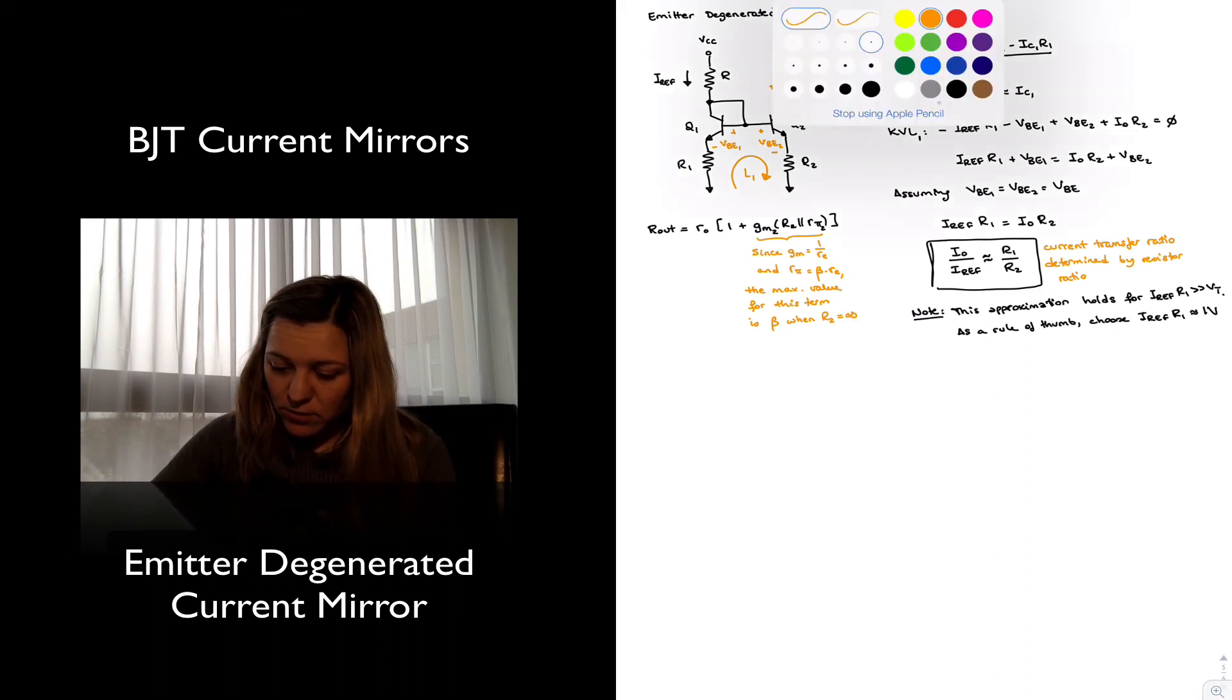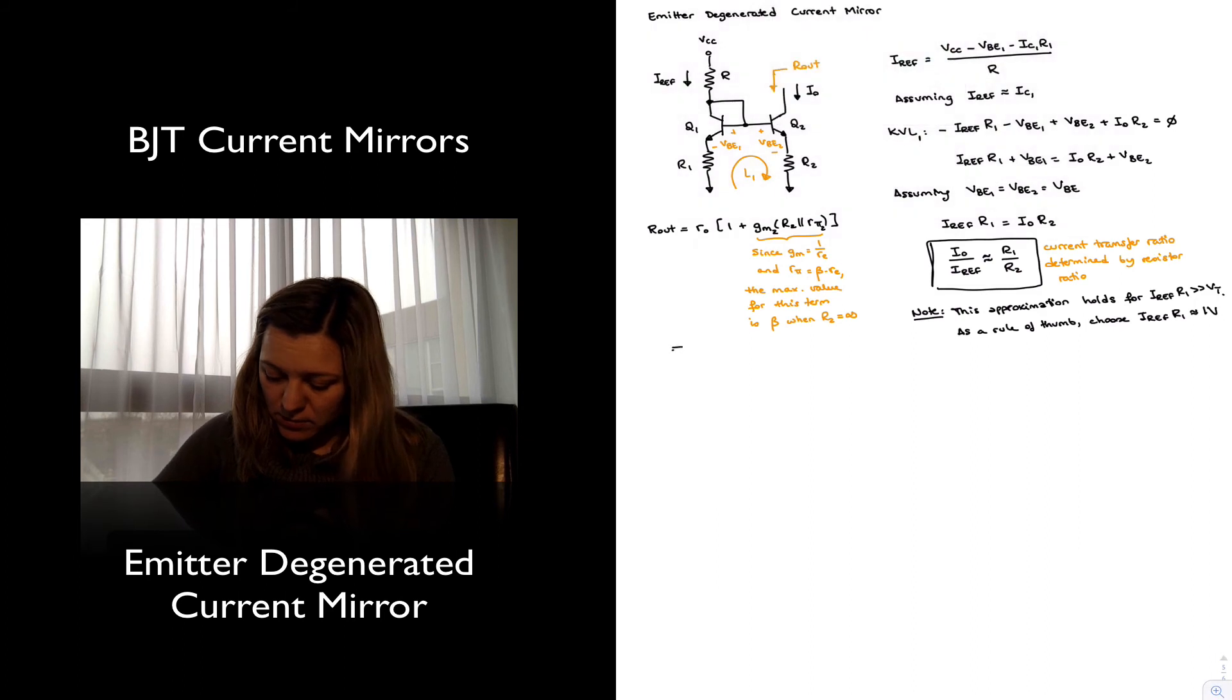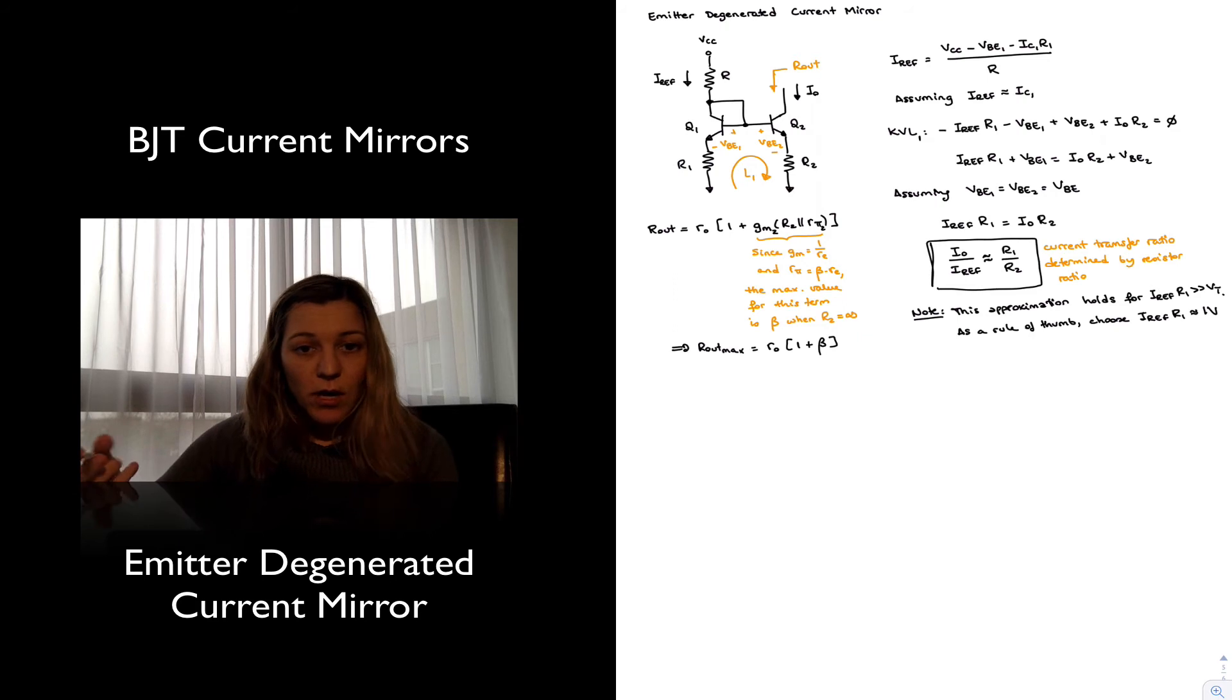And therefore, the Routmax will be equal to r_o times 1 plus beta. So again, whenever we are looking at a new current source, we want to look at the advantages with respect to other, typically the basic current mirror, as well as disadvantages or trade-offs.